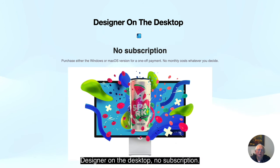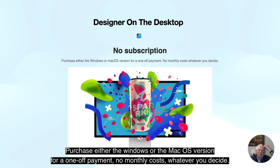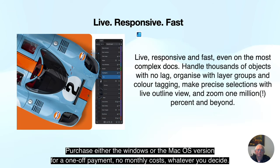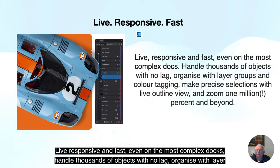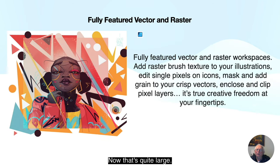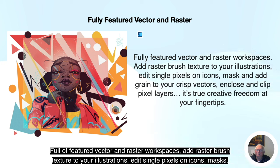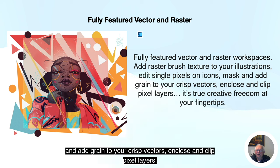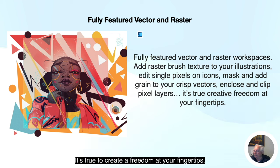Designer on the desktop — no subscription. Purchase either the Windows or Mac OS version for a one-off payment, no monthly costs. It's live, responsive and fast, even on the most complex documents. Handle thousands of objects with no lag, organize with layer groups and color tagging, make precise selections with live outline view, and zoom up to a million percent and beyond. Fully featured vector and raster workspaces — add raster brush texture to your illustrations, edit single pixels on icons, use masks, and add grain to your crisp vectors.